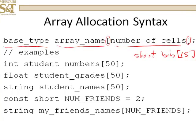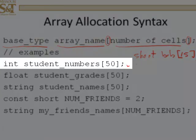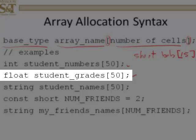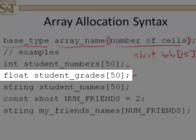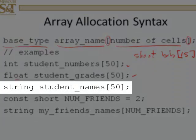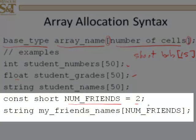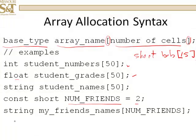So, I've got several examples here. We've got an array called student_numbers of size 50, base type int. Then another array of student_grades, again, 50 elements in the array, base type float. Then I've got an array of strings of type 50. I'm going to declare a constant, initialize to 2, and I'll have an array called my_friends_names, which is a base type string of size 2. Those are the only friends that I've got.